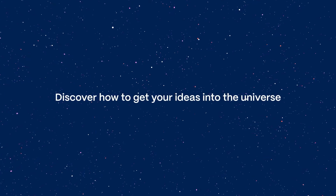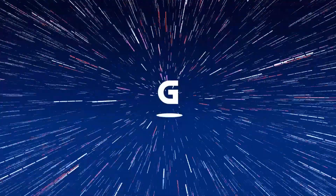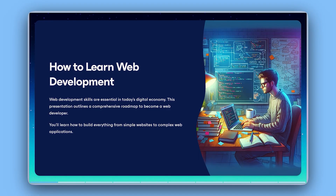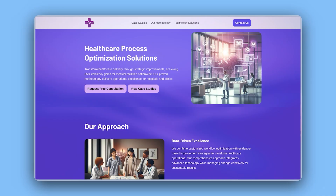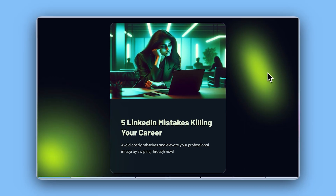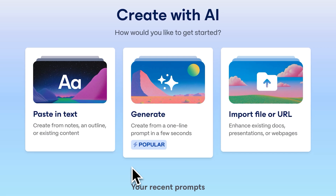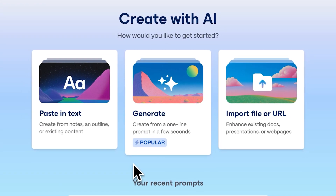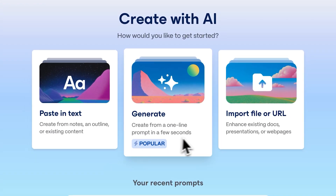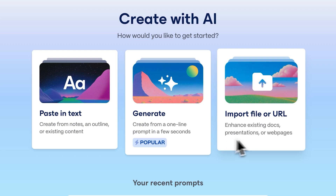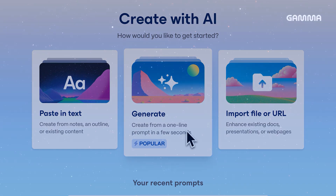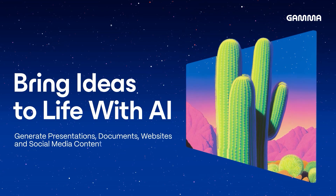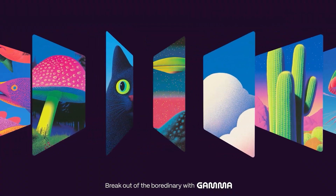Discover how to get your ideas into the universe. With Gamma, you can create beautiful presentations, documents, web pages, and social media content in seconds with AI. There are three main ways of bringing your ideas to life with Gamma: pasting in text, generating with AI, and importing files. Today we'll explore how to generate content with just a prompt with generate with AI. Let's dive into it.